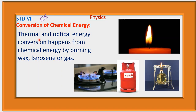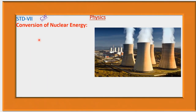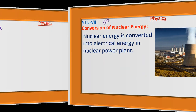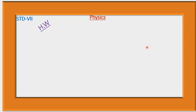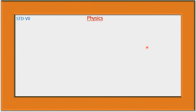This is a nuclear power plant. Electricity is produced in a nuclear power plant — nuclear energy is converted into electrical energy. For homework, make a list of 10 examples of energy conversion you can see in your daily life. Thank you for watching this video.